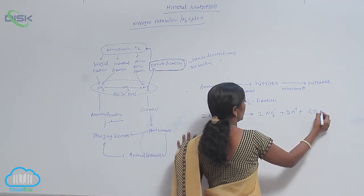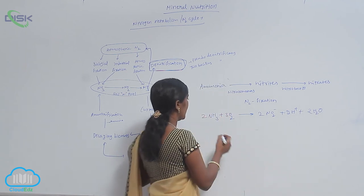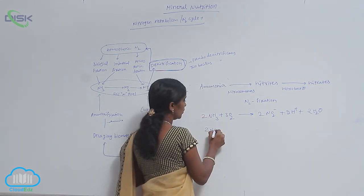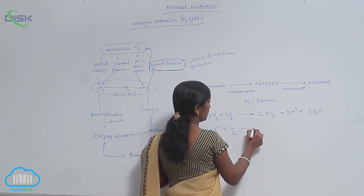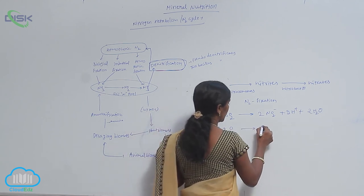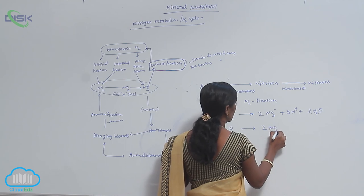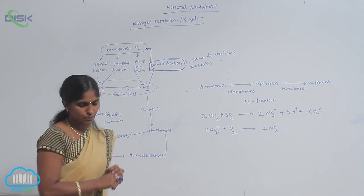And 2NO2- + O2 produces 2NO3-. Nitrates are produced.